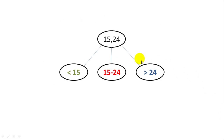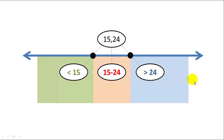A typical node may look like this — 15 and 24. In this case we have two items in the node, therefore we must have three child nodes. The values in this node segment off the subtrees of the children into three sections: less than 15 goes into the left subtree, items between 15 and 24 go in the middle subtree, and everything greater than 24 goes in the right subtree.